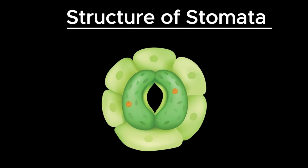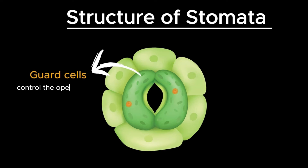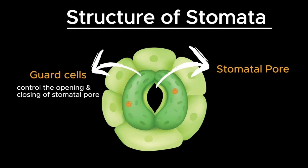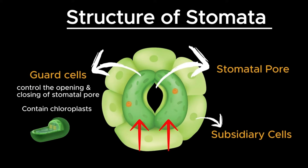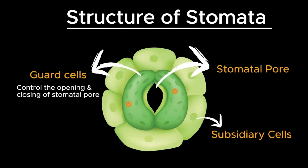Stomata are surrounded by two specialized cells called guard cells. These cells control the opening and closing of the stomatal pore. Each stoma typically consists of two guard cells, although in some cases subsidiary cells may also be present. Guard cells contain chloroplasts, which enable them to photosynthesize and produce energy, allowing the guard cells to respond to environmental cues and regulate stomatal aperture accordingly.